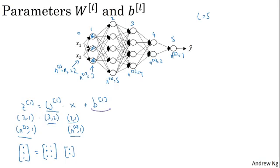Because a 3 by 2 matrix times a 2 by 1 matrix, or times a 2 by 1 vector, gives you a 3 by 1 vector. And more generally, this is going to be an n1 by n0 dimensional matrix. So the dimensions of w1 has to be n1 by n0.